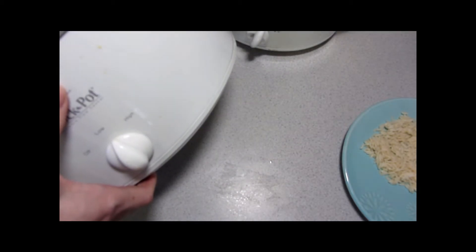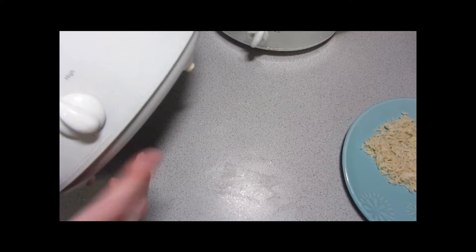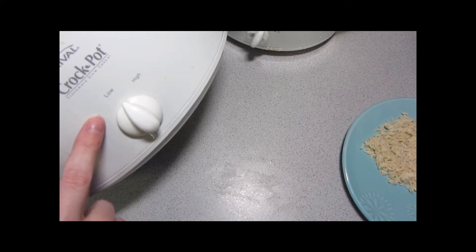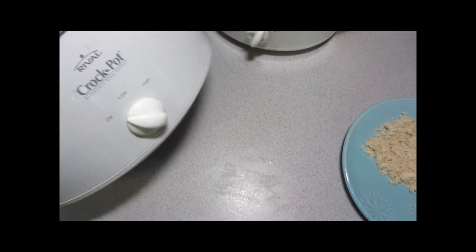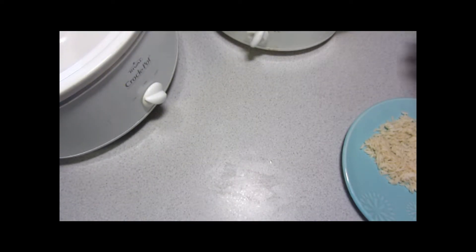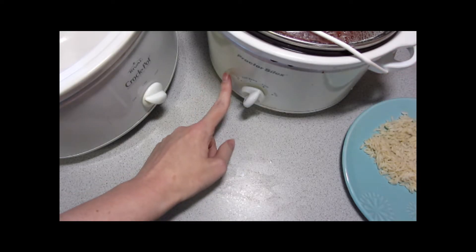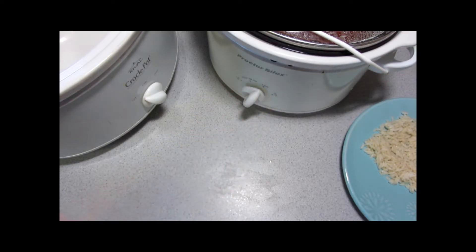Slow cookers or crock pots come in many forms. My large one here has only off, low, and high. My small one that I use regularly has off, keep warm, low, and high.